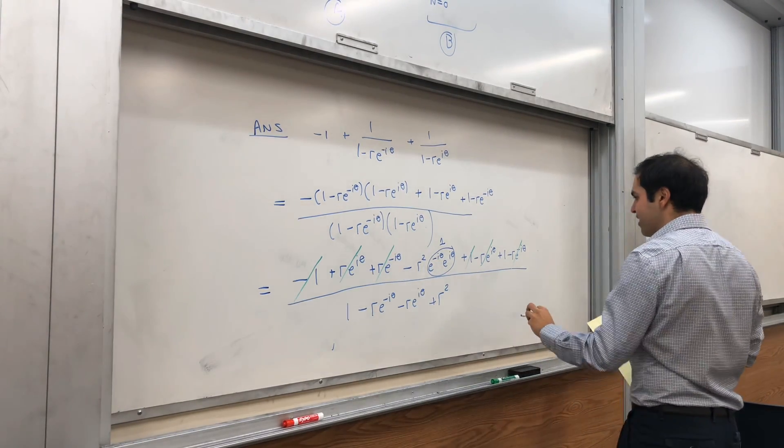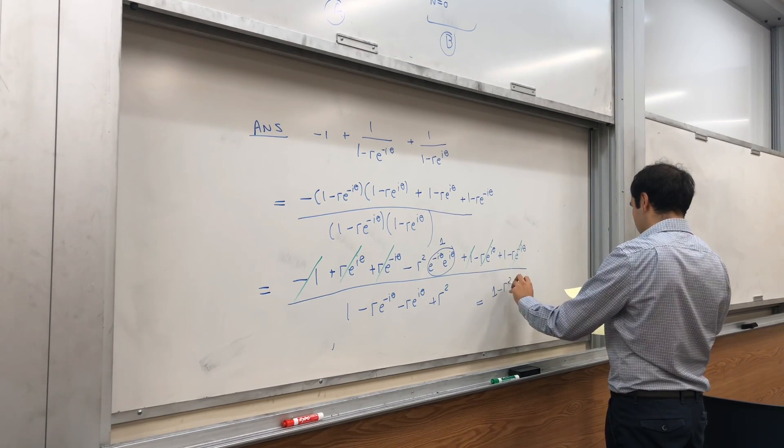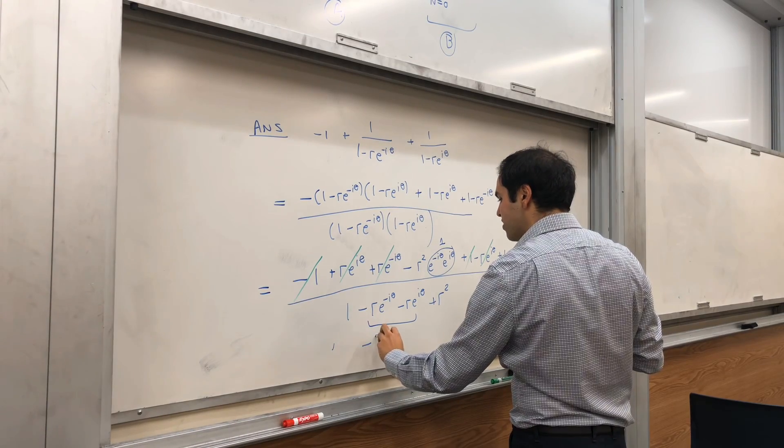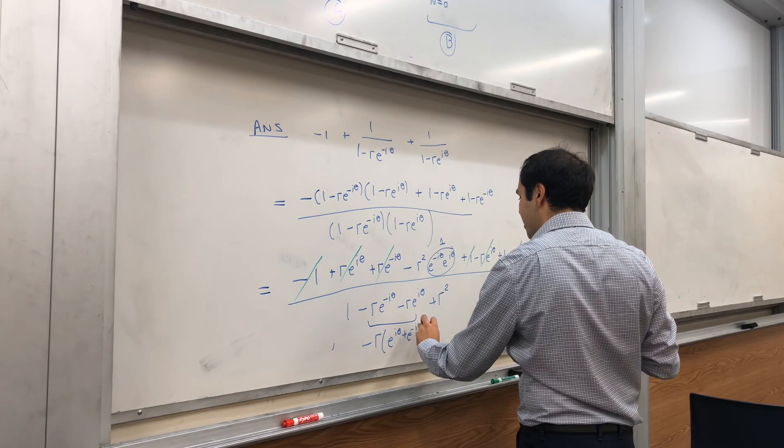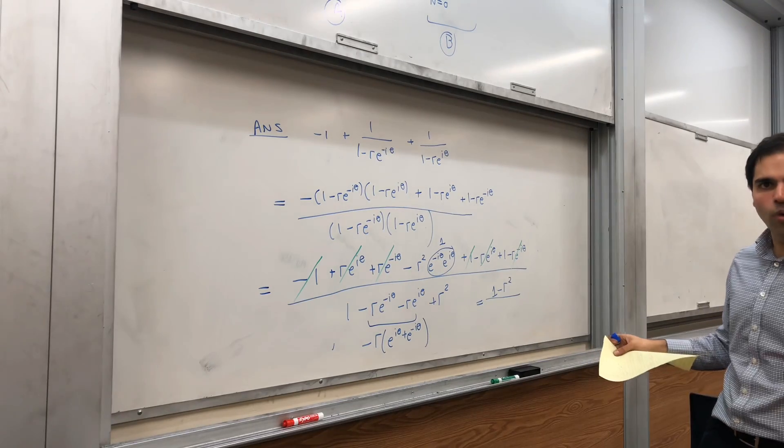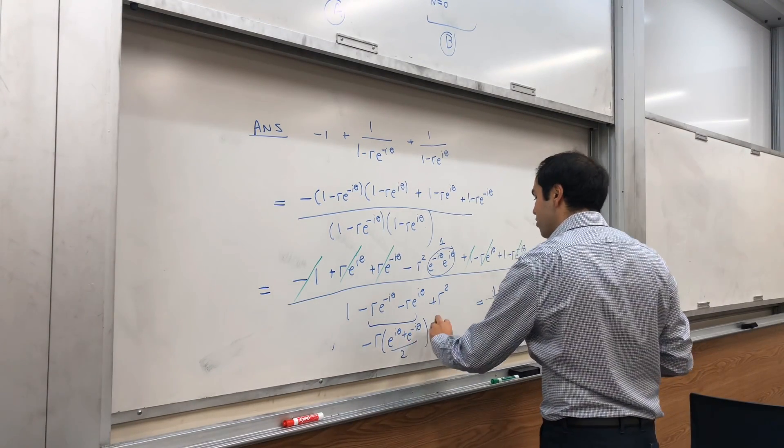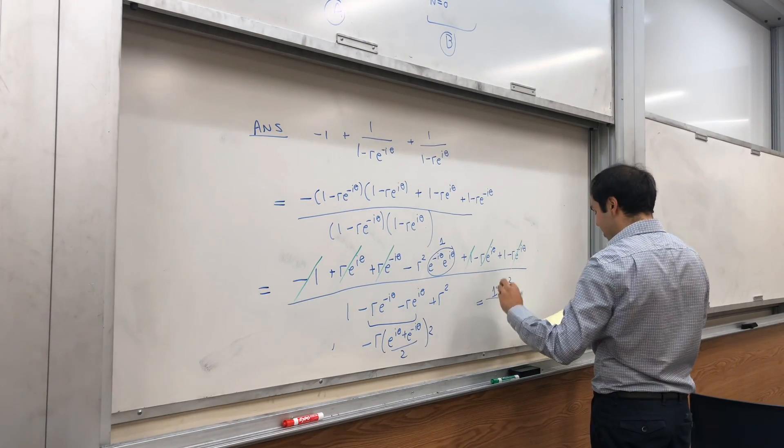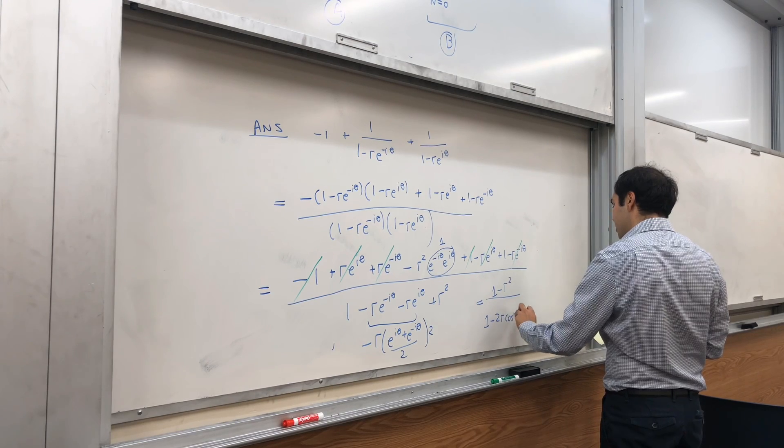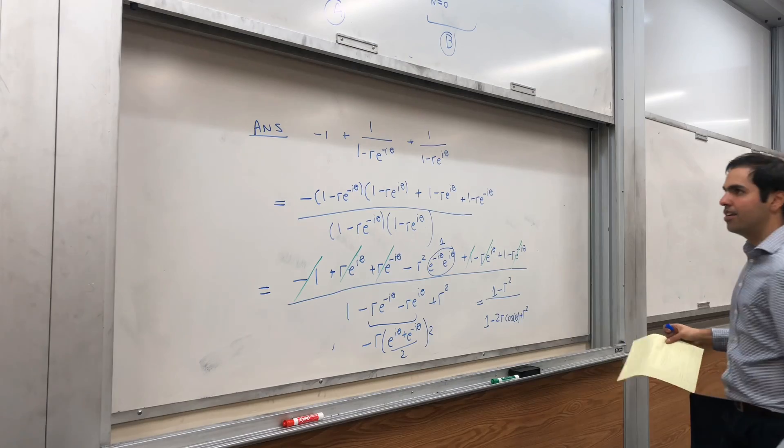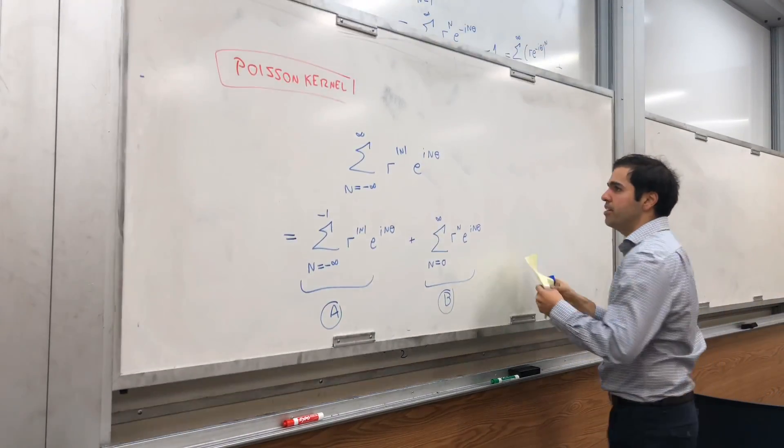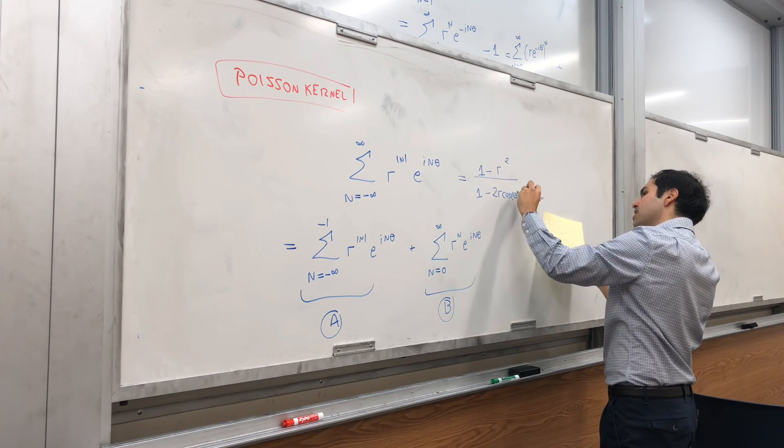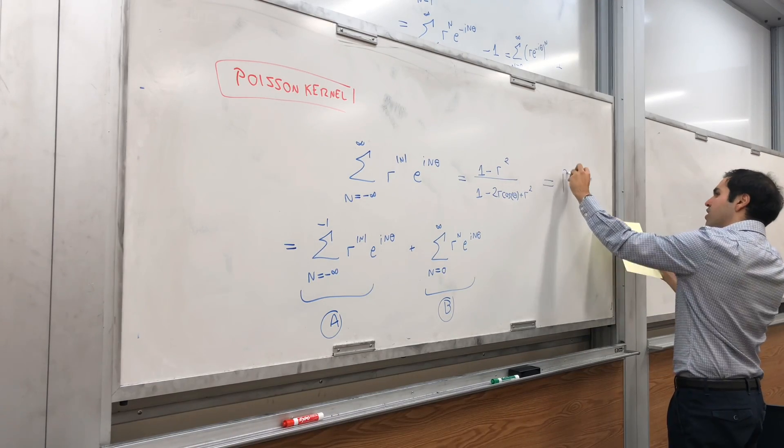And therefore, in the end, the numerator becomes 1 - r². And the denominator, you can simplify this a little bit more, because this becomes minus r times (e^(iθ) + e^(-iθ)). Well, it looks almost like cosine, except you need to add and divide by 2. So multiply and divide by 2, and indeed, this becomes -2r cos(θ). So we get 1 - 2r cos(θ) + r². And therefore, our thing here becomes the sum is (1 - r²)/(1 - 2r cos(θ) + r²). And this thing is what's called the Poisson kernel.